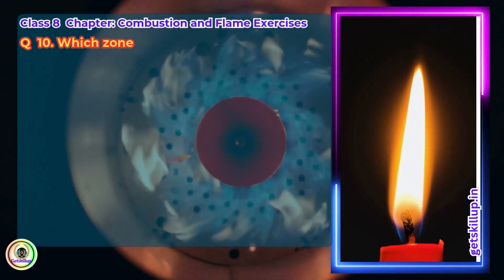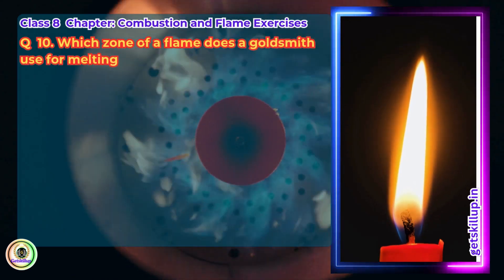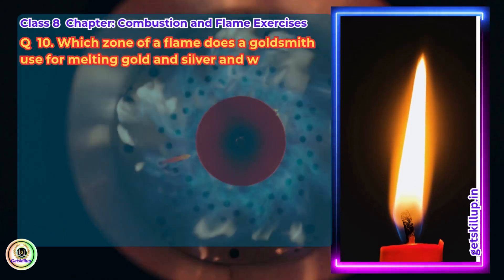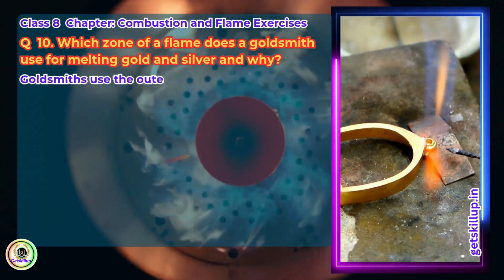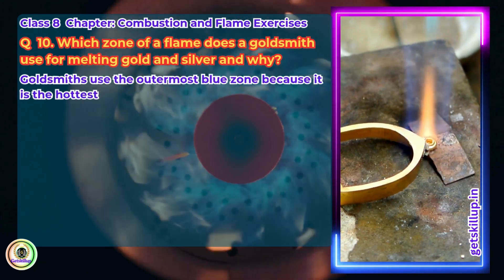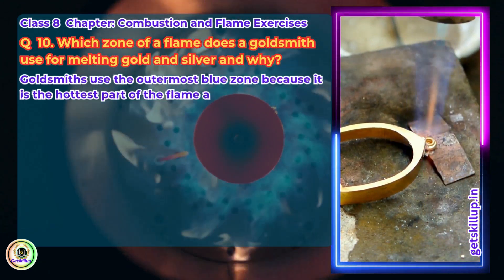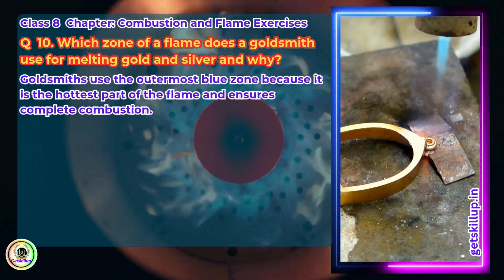Question 10: Which zone of a flame does a goldsmith use for melting gold and silver, and why? Answer: Goldsmiths use the outermost blue zone because it is the hottest part of the flame and ensures complete combustion.